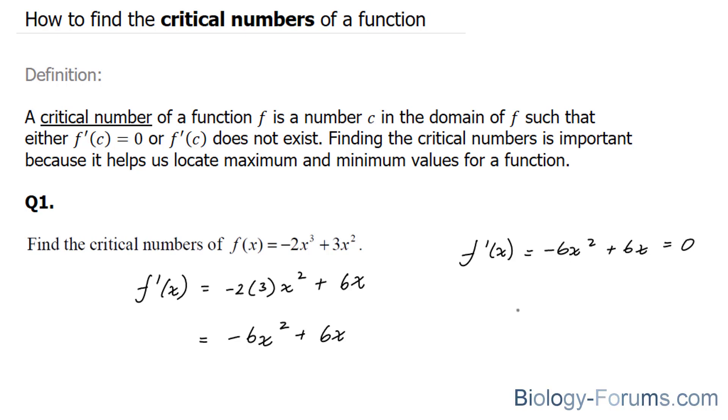So we'll common factor a 6 and an x, giving us 6x(-x + 1). And if we solve for x here, we end up with x = 0 or x = 1. And those are our critical values for question number 1.